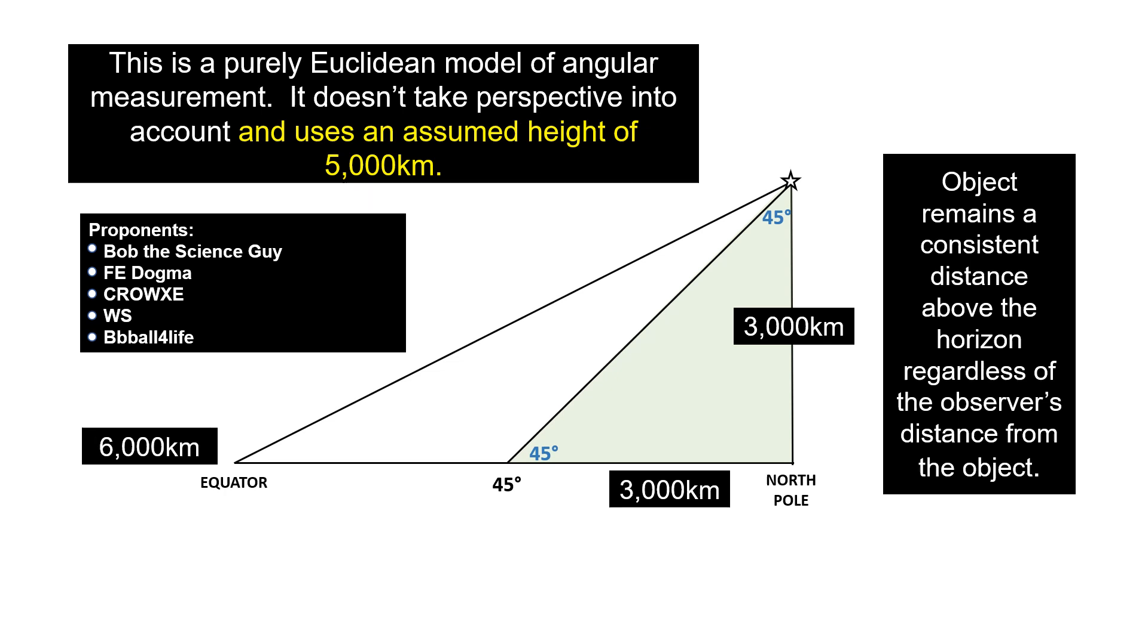And if you think that's wrong, change it to 3000 kilometers. Of course, now the distance from the North Pole to the 45th latitude is also 3000 kilometers. And the distance to the equator is now 6000 kilometers.